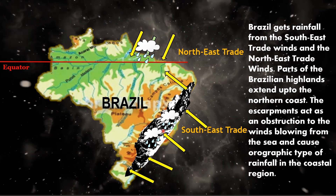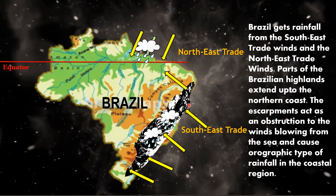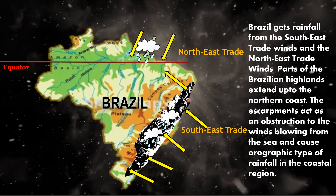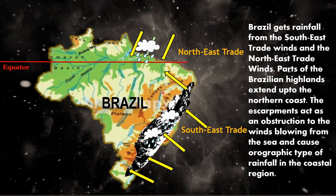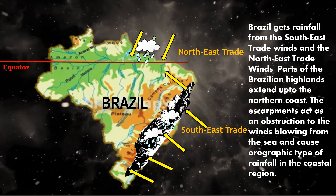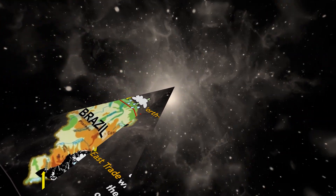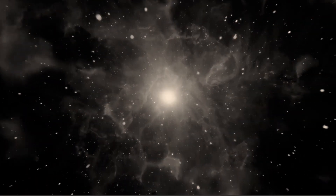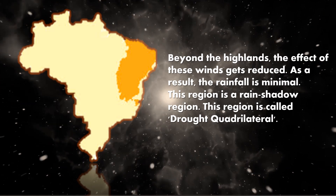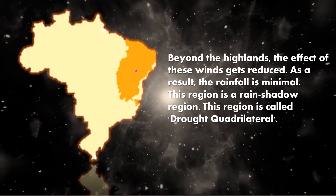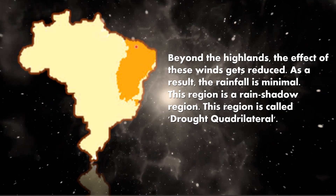We've already studied how orographic rain occurs. The coastal region, which is the windward side, experiences more rain. By the time the winds blow to the other side of the mountain, the moisture content in the clouds is reduced, and this side is called the leeward side. Beyond the highlands, the effect of the trade winds gets reduced, so rainfall is minimum on the leeward side of the escarpment. This region is a rain shadow region, also called the drought quadrilateral.